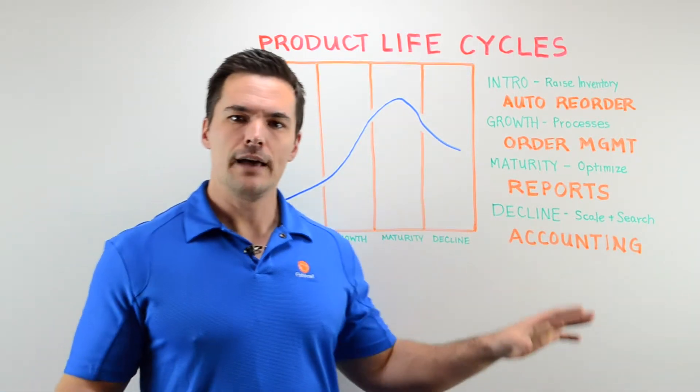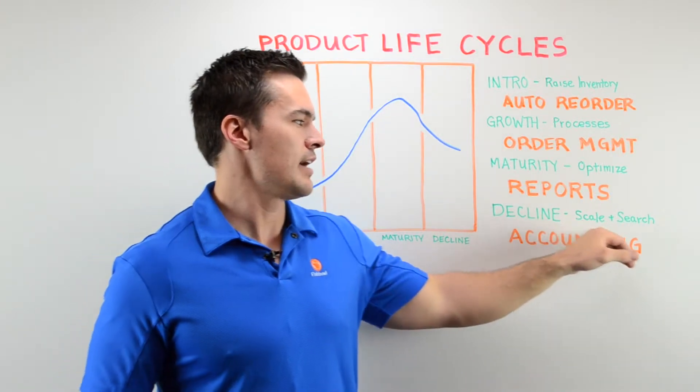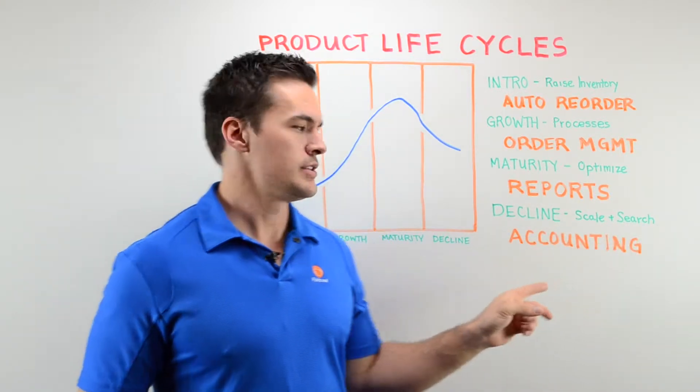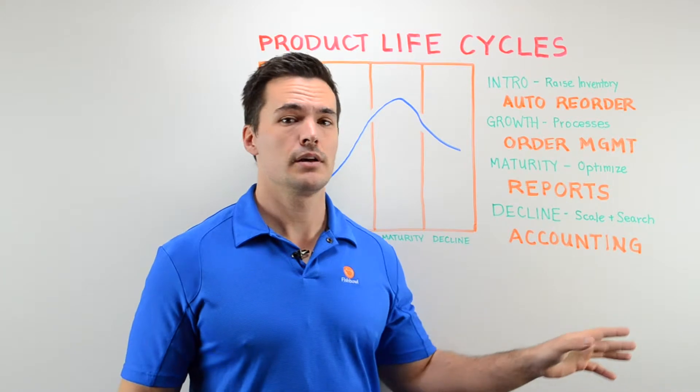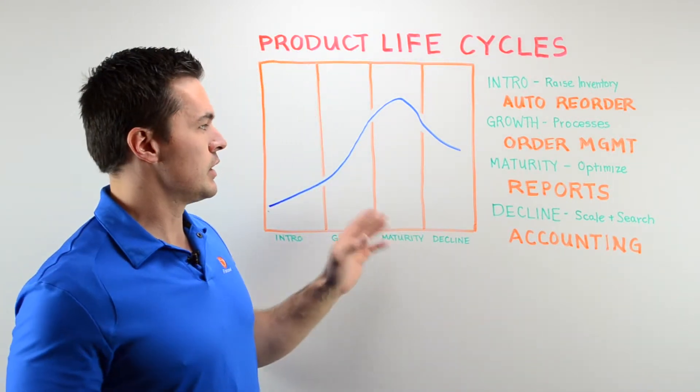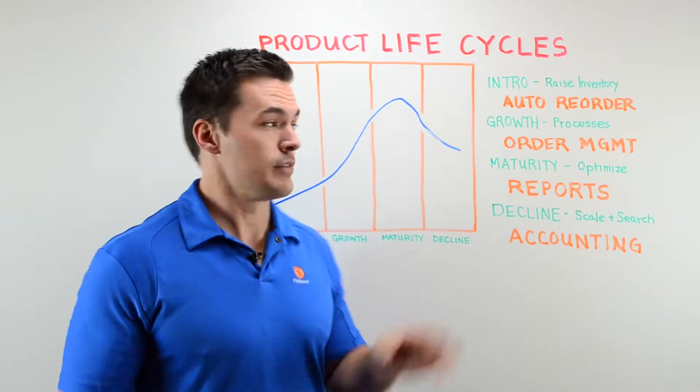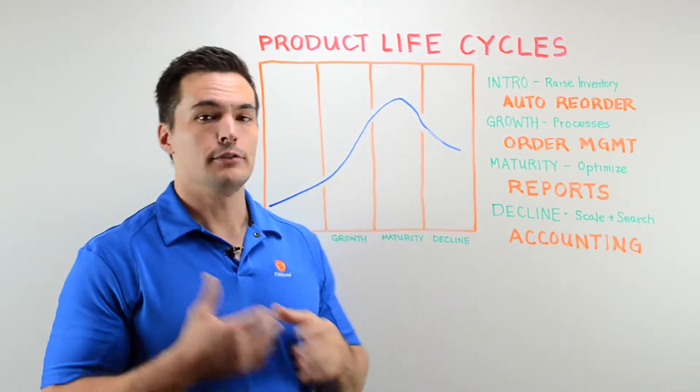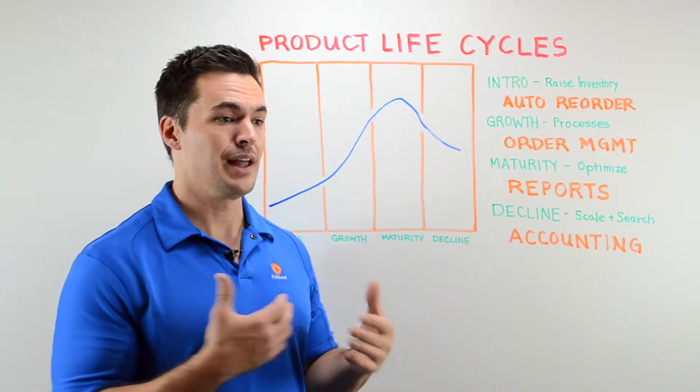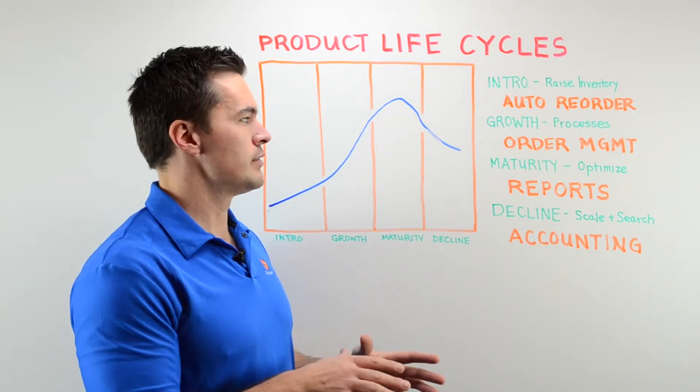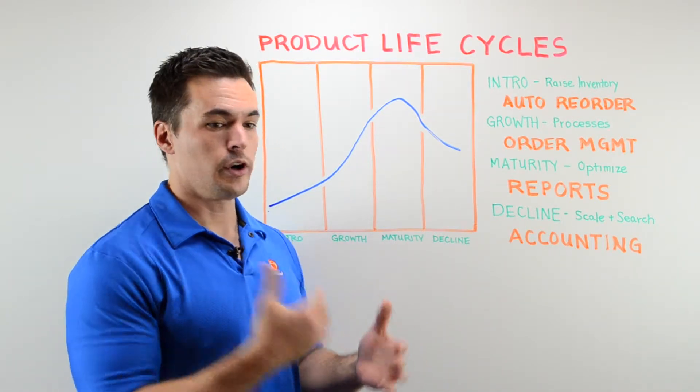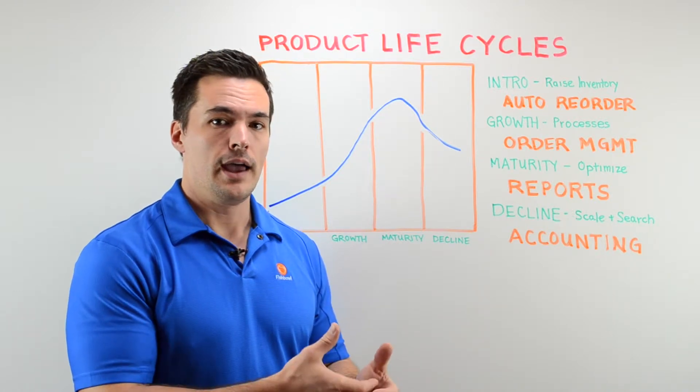The decline - it's sad but it happens. We need to scale and search, and this is where accurate accounting really comes into play. Because if you can scale appropriately in this decline part of whatever this product is, you're not going to have too much on your shelves, you're not going to plan it too far ahead, you're going to keep just the right levels so that you can look at where your revenue stream is coming from and adjust accordingly.